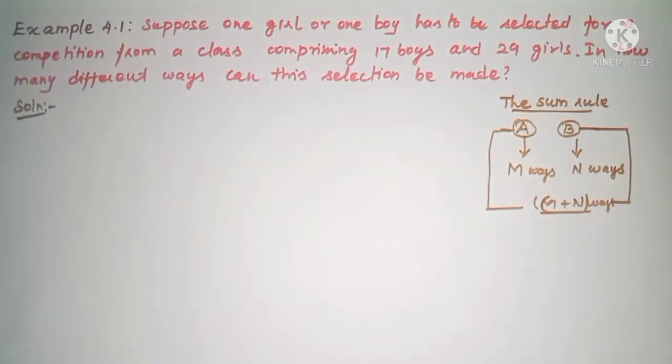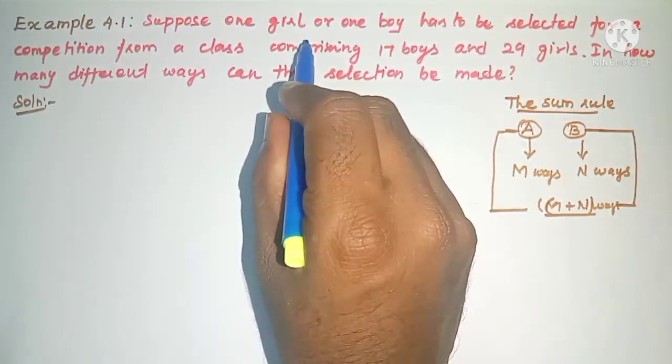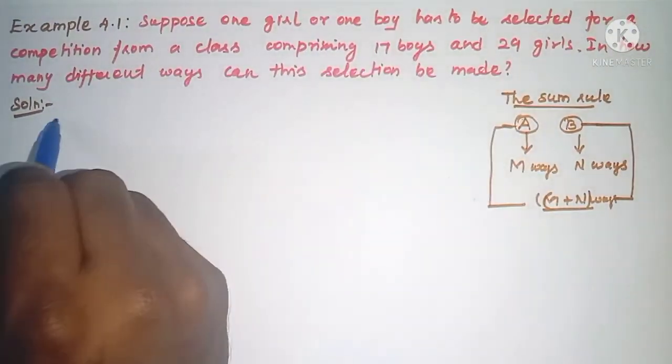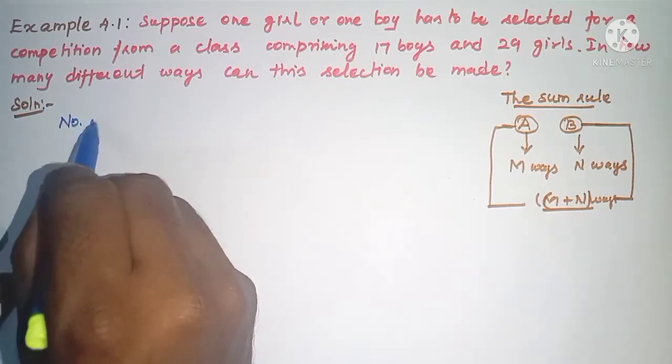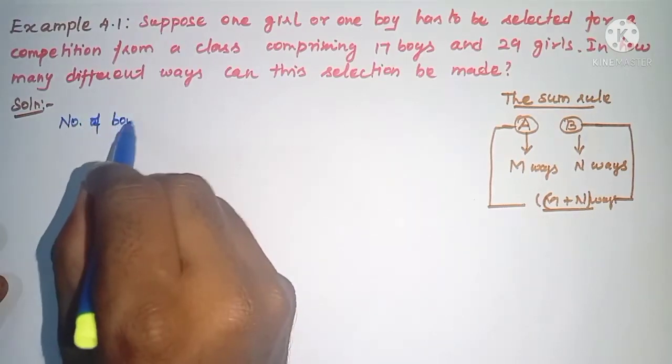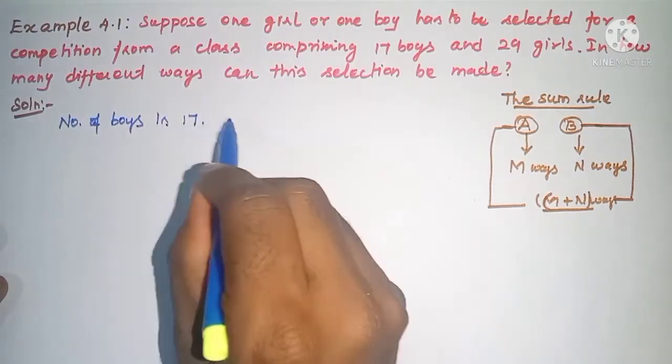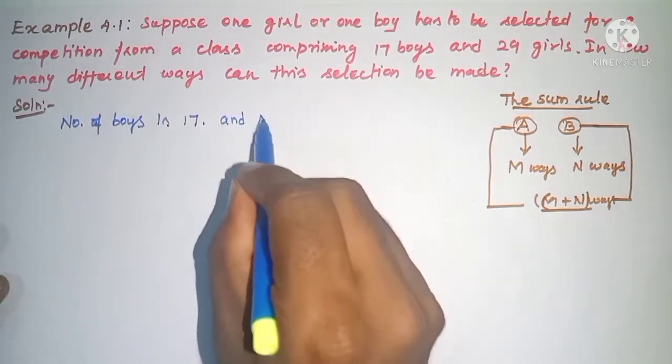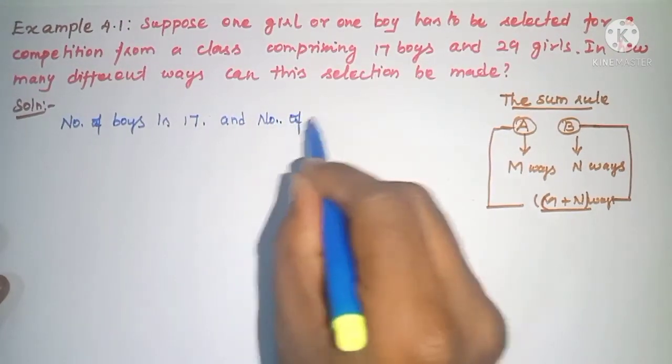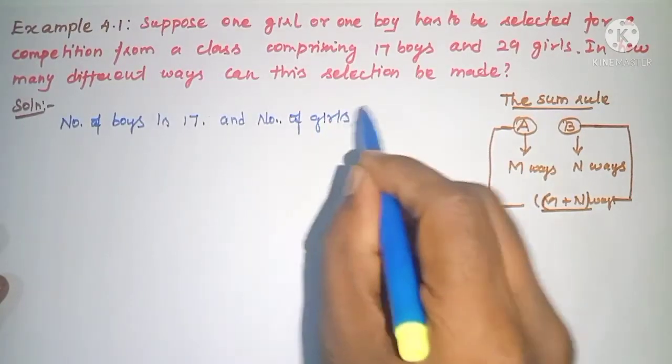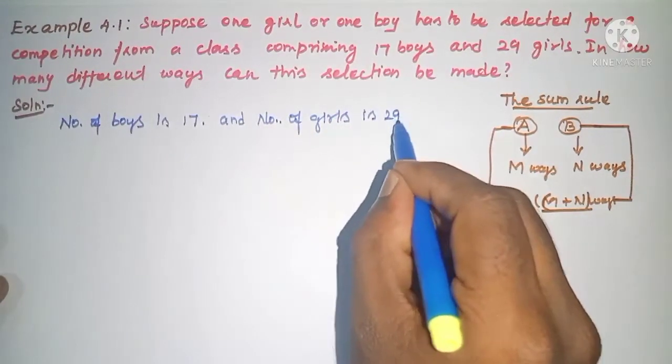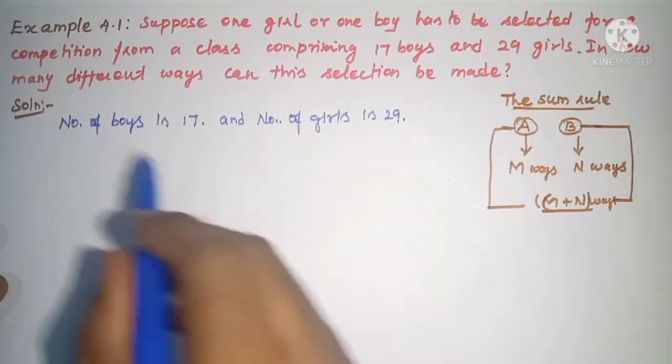First, what is the given? Girls and boys. So, number of boys is 17, and number of girls is 29.